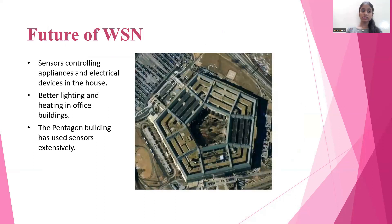The future of WSN includes sensors controlling appliances and electrical devices in the house, better lighting and heating in office buildings. As we have smartphones in our hands now, we can expect even smarter integration. The Pentagon building has used sensors extensively, as shown in the diagram.